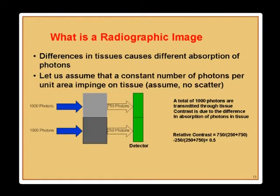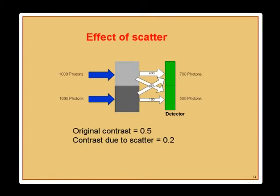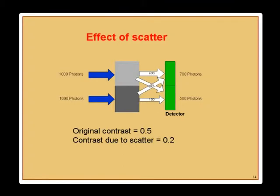Differences in tissues cause differences in absorption of photons. If a constant number of photons per unit area impinge on tissues — say 1000 — in one case you get 750 and in another 250 onto the detector. If the detector can count photons, the relative contrast is 750 divided by the total, which is 0.5. However, photons are not like a laser beam — things get scattered in different dimensions. Photons that exit one tissue region can land on another part of the detector.